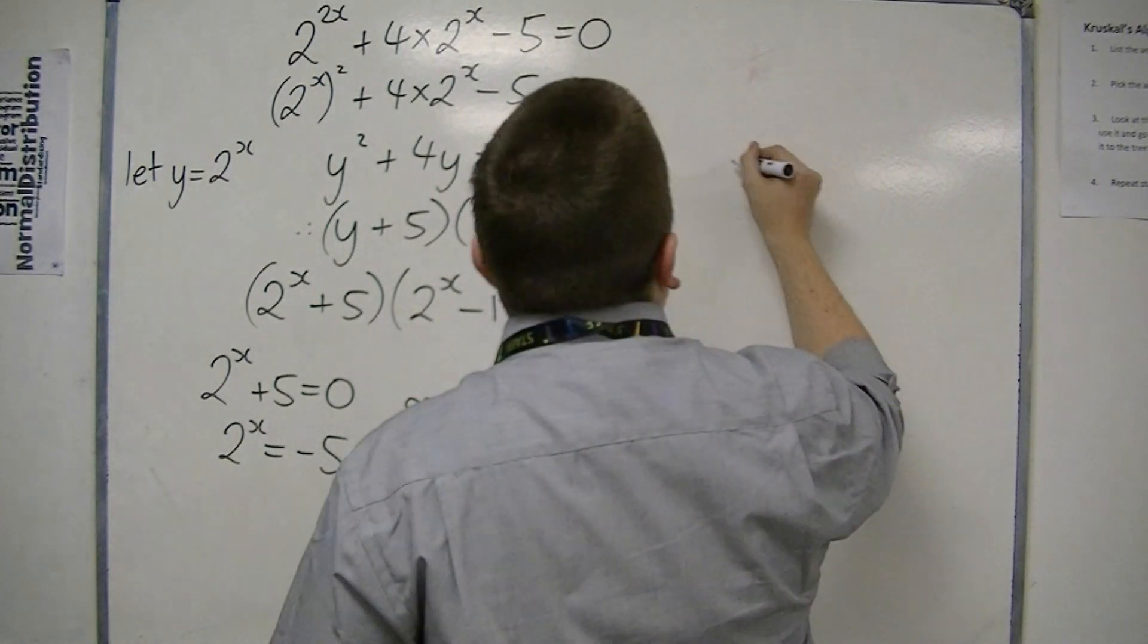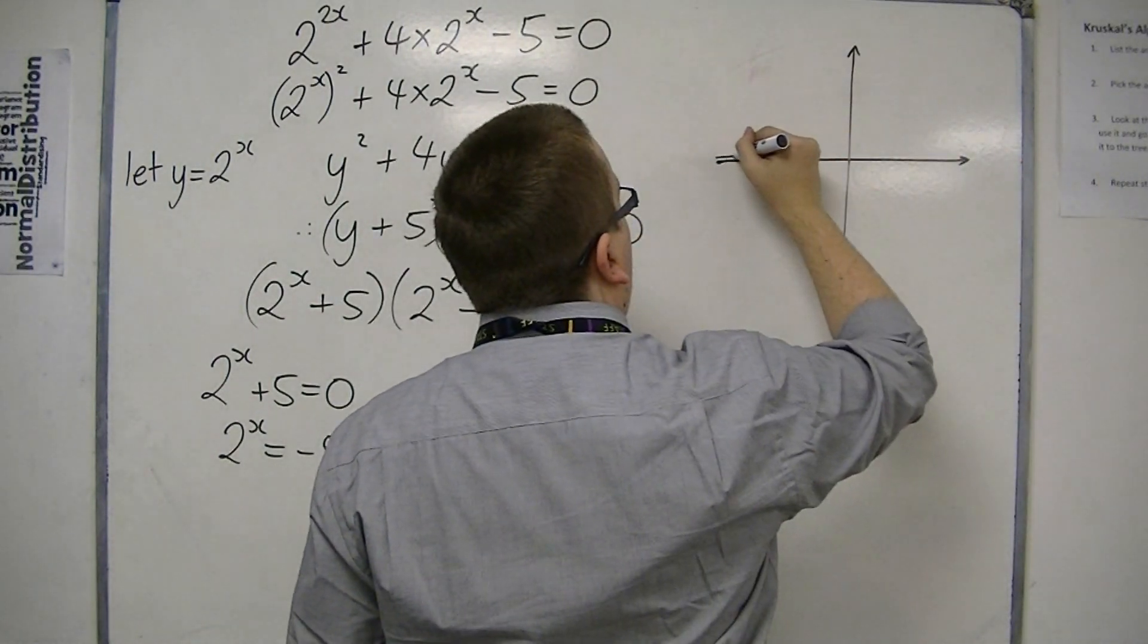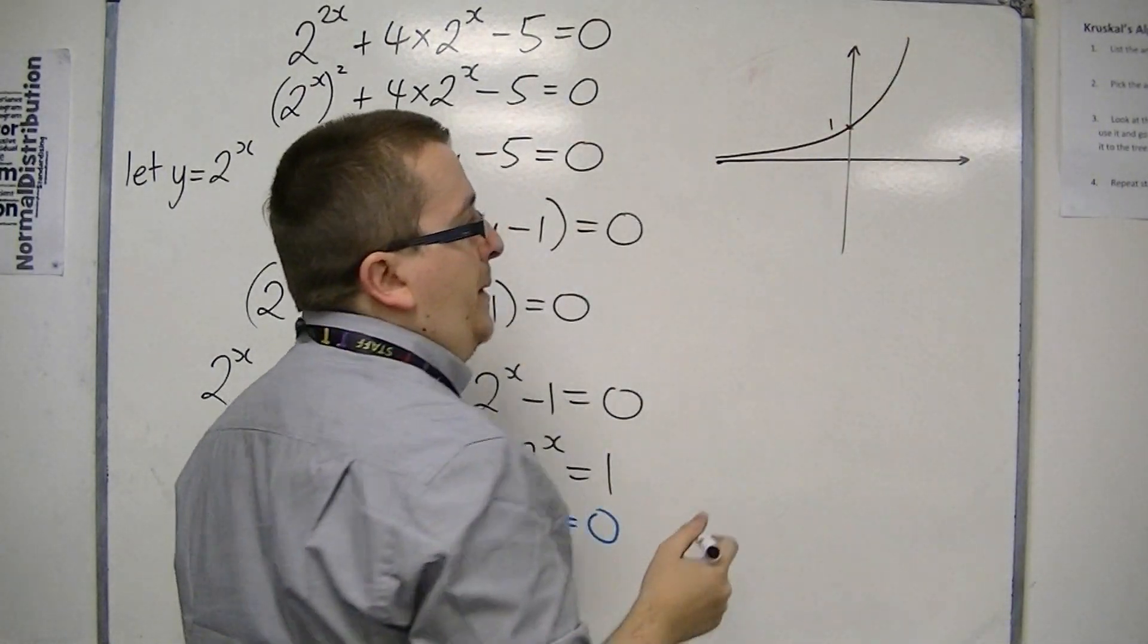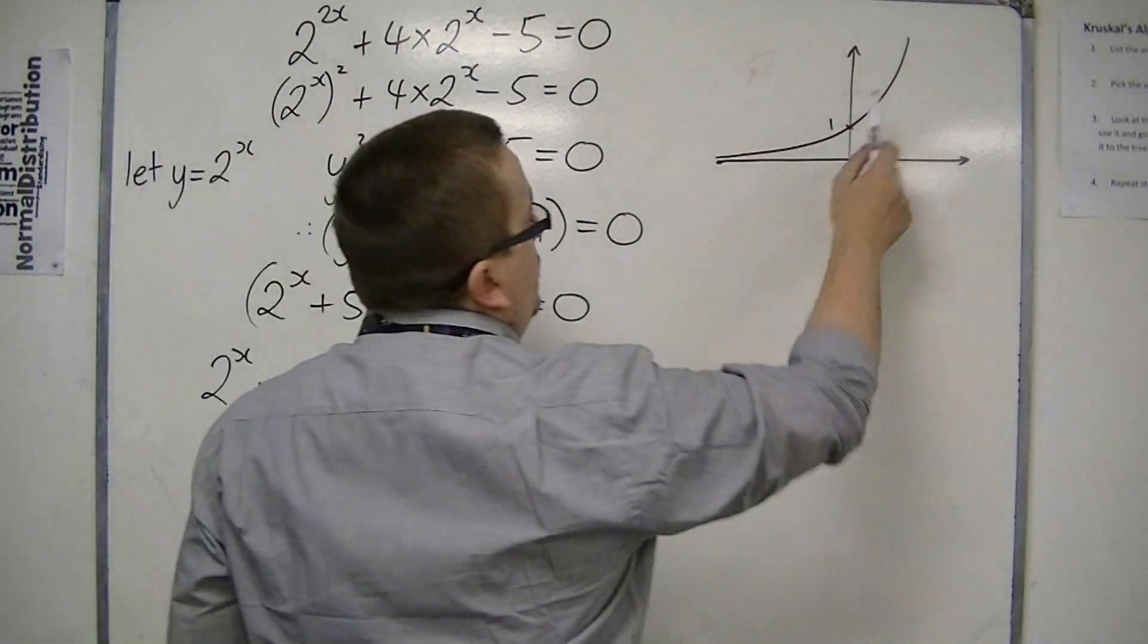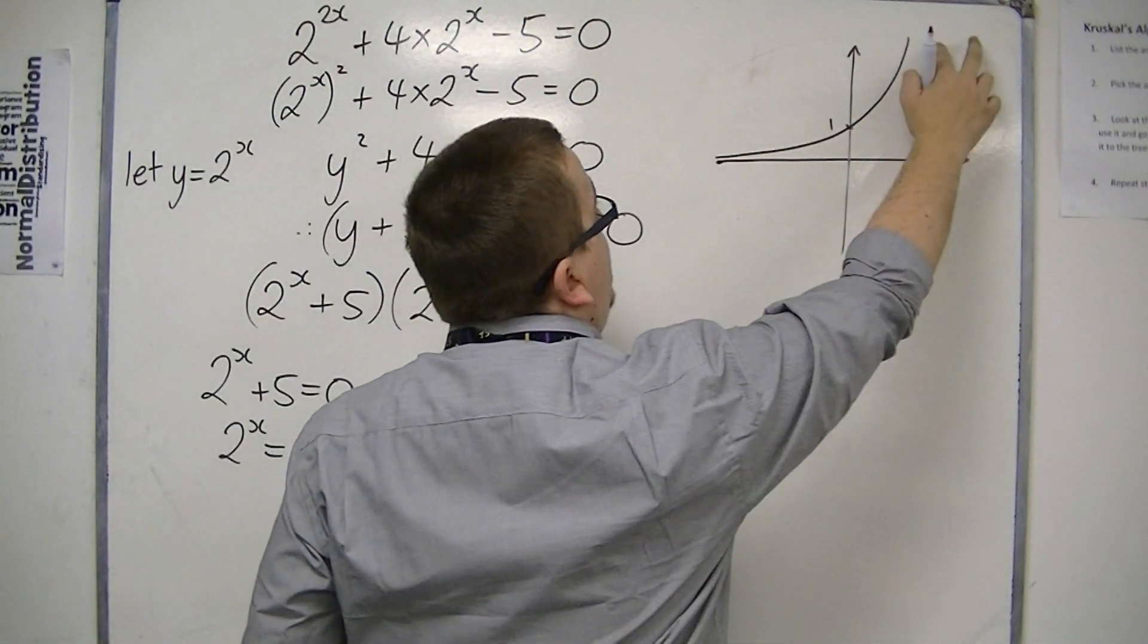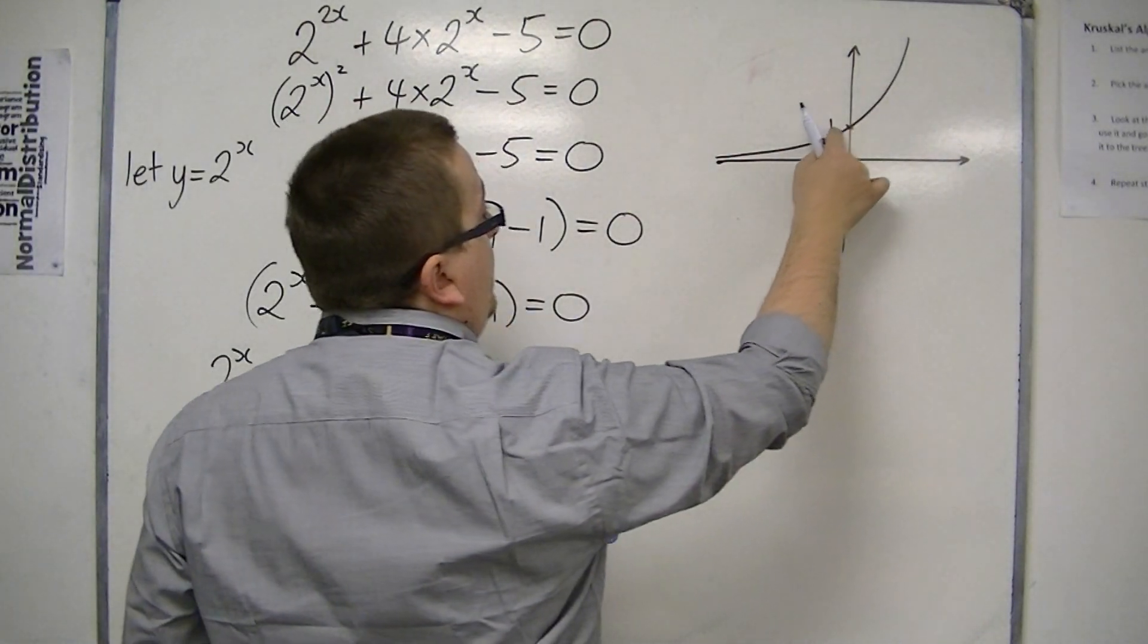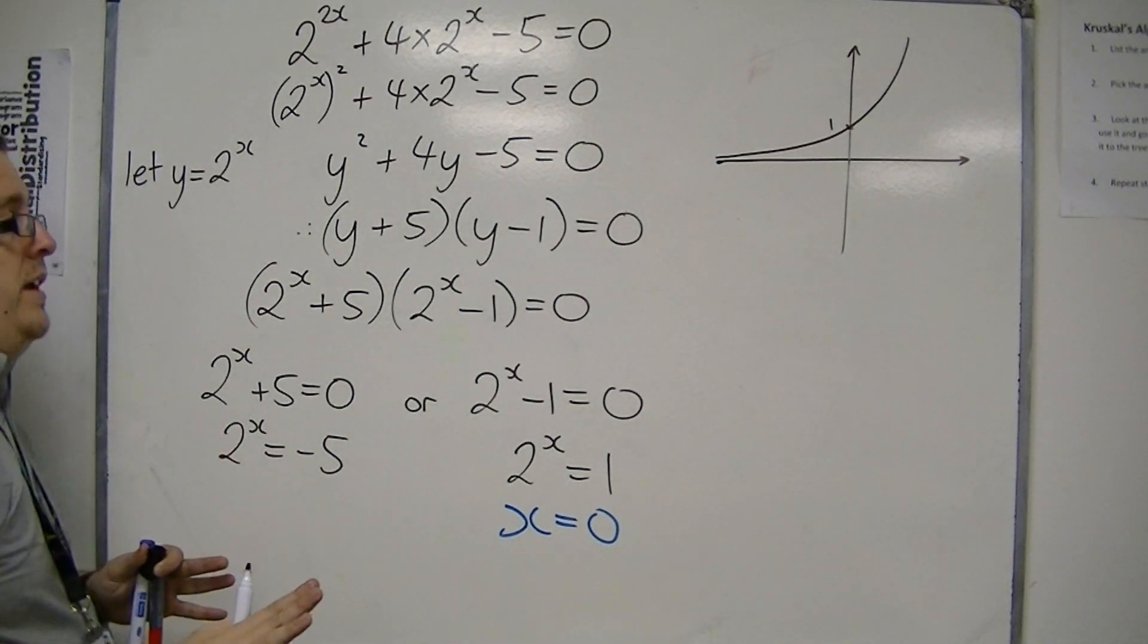This is because 2 to the x is a curve that looks something like this, going through 1 on the y-axis, because 2 to the 0 is 1. And as you can see, on the right-hand side of the x-axis, the graph increases exponentially. But on the left-hand side, it is getting closer and closer and closer to 0, but never reaching it.